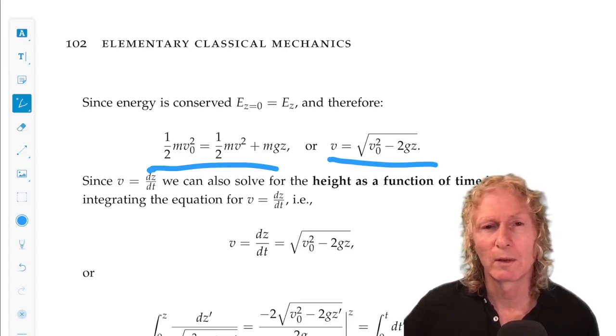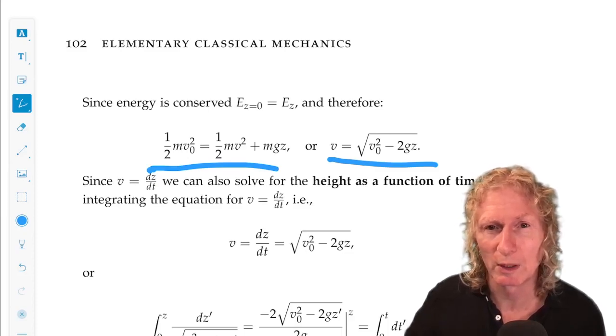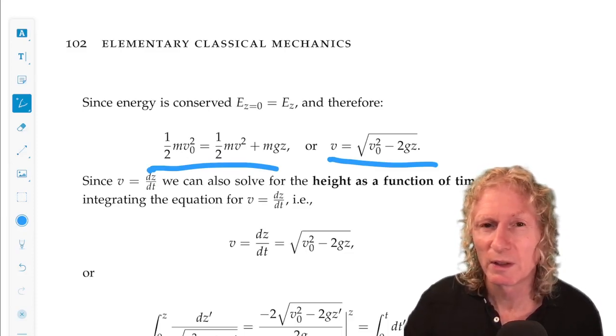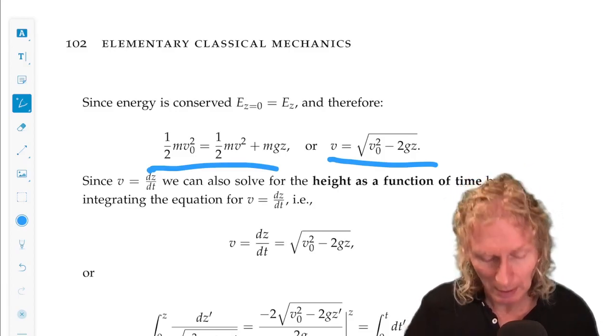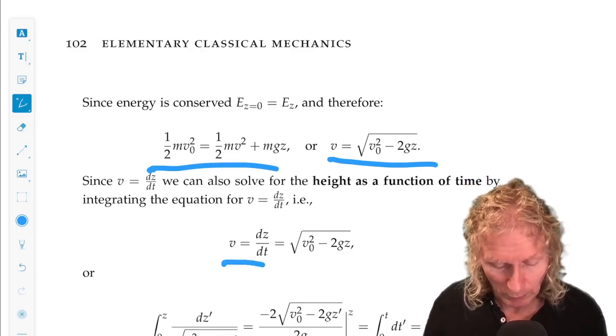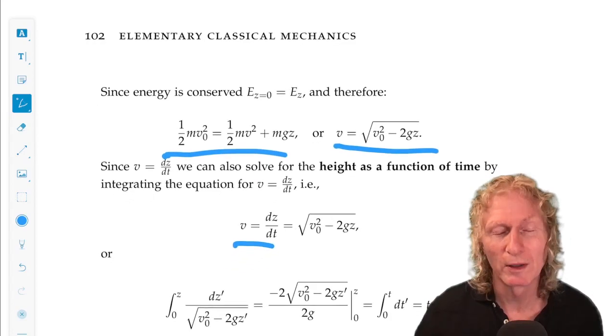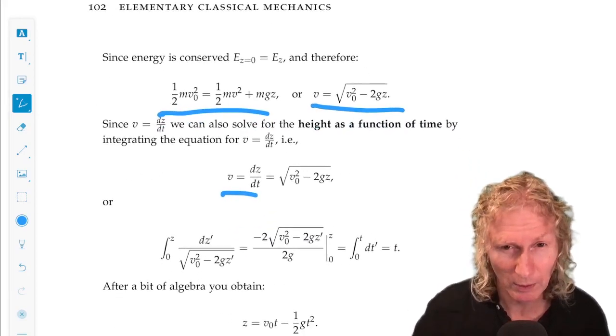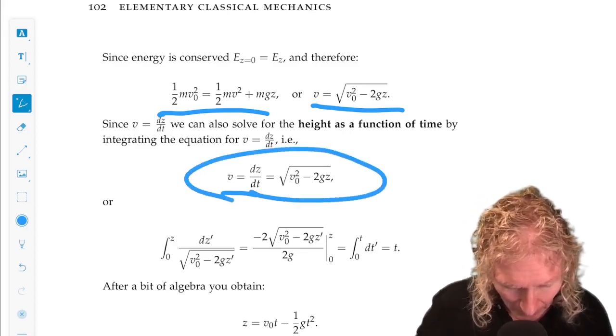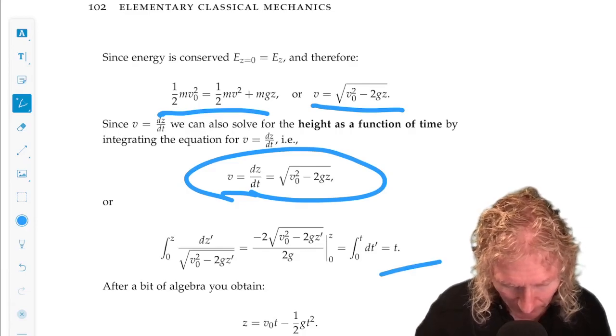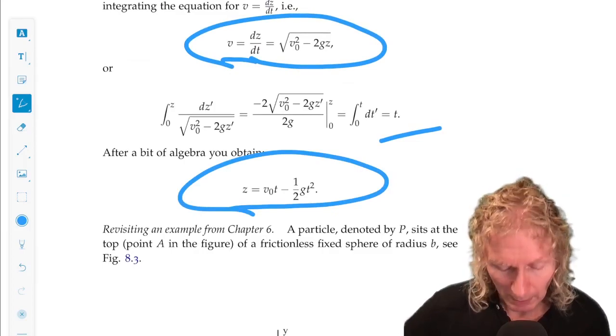Energy methods, the energy is expressed in terms of velocities and positions, and these are the relationships you can get. If you want positions as a function of time, time is not explicitly in the energy relation, you're going to have to do a little integral. We have the speed or velocity, magnitude. There's only one direction, so I'm being a little bit sloppy with calling velocity and speed, but you can integrate this, and you get z, or height, as a function of time.